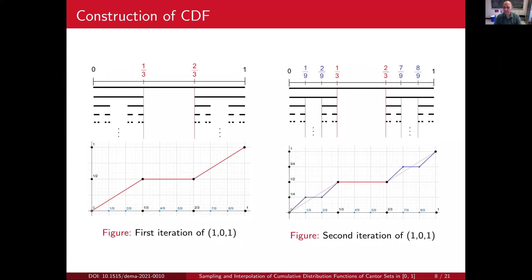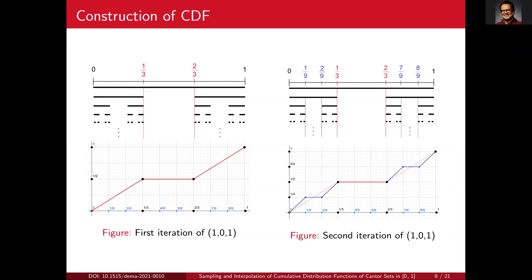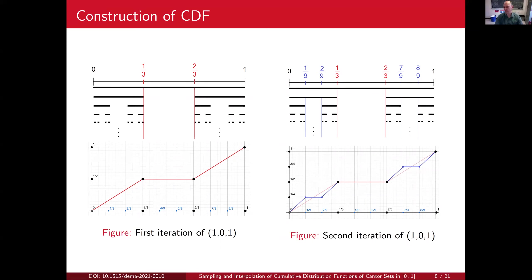Audience question: what does 0.11 mean on the x-axis? Eric clarifies: the x-axis shows the partition divisions of the interval, and the y-axis represents the value of the function between zero and one. There's no real division on the y-axis that is crucial — for us the x-axis is what matters.